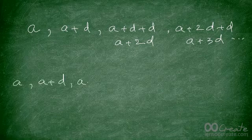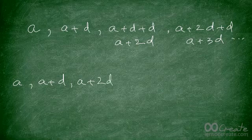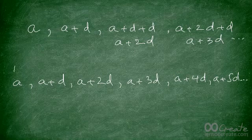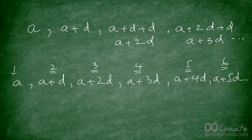To summarize: the first term is a, the second is a + d, the third is a + 2d, the fourth is a + 3d, the fifth is a + 4d, and the sixth is a + 5d. Now there's a clear pattern here. What do you think the tenth term is going to be in terms of a and d?